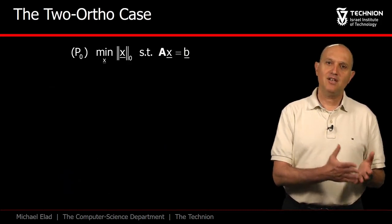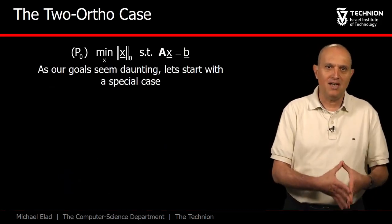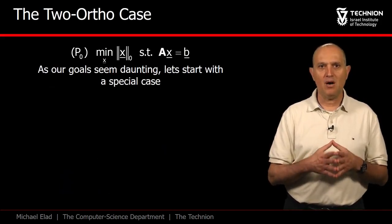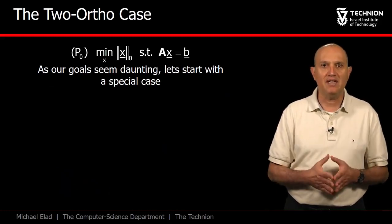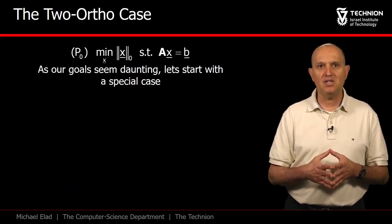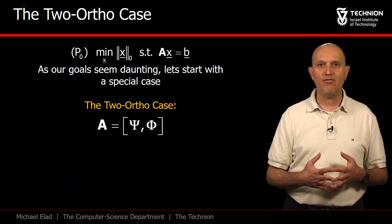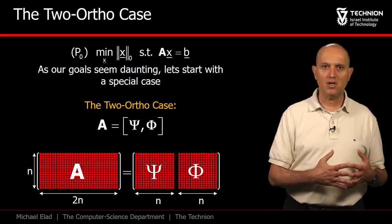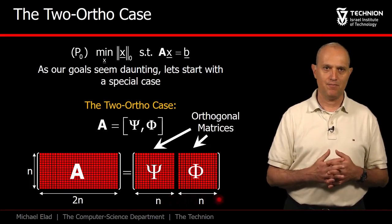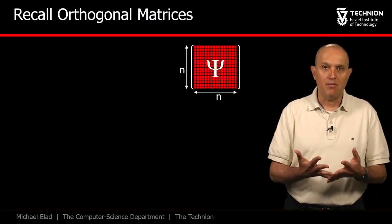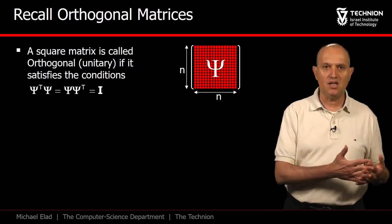And all this brings us to define now the two-ortho case. The reason we turn to this special case is mostly historic. This is how the knowledge in our field evolved. Suspecting that the P0 problem is too complicated, researchers turned to seek a more intuitive entry point. In the two-ortho case, we consider matrices A of very special form, constructed as the amalgam of two orthogonal matrices, psi and phi. These matrices are obviously square, n by n. And orthogonality implies that the transpose of these matrices serves as their inverse.